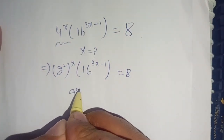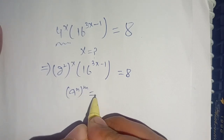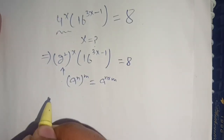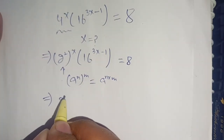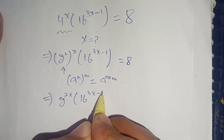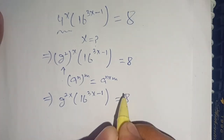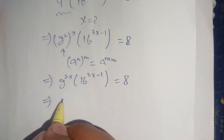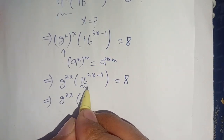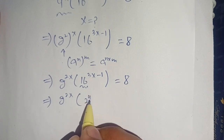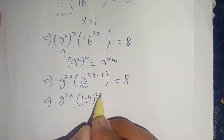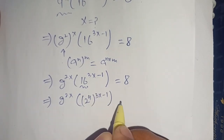We use the identity (a^n)^m = a^(n·m). Applying this we get 2^(2x) times 16^(3x - 1) equals 8. Now 16 can be written as 2^4, so we have 2^(2x) times (2^4)^(3x - 1) equals 8.